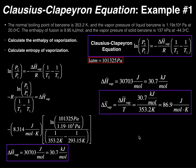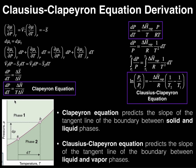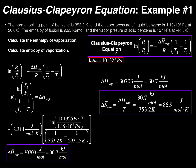Welcome back to Physical Chemistry on Catalyst University. My name is Kevin Tokoff. In the previous video we discussed the derivation of both the Clapeyron equation and the Clausius-Clapeyron equation. Now we're actually going to use the Clausius-Clapeyron equation shown here to work an example problem so you can see what it's used for.